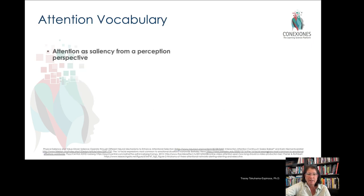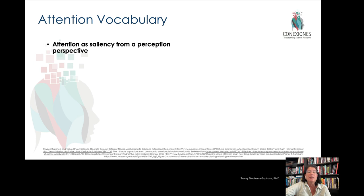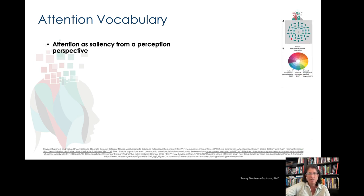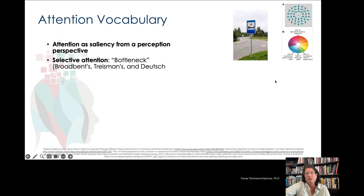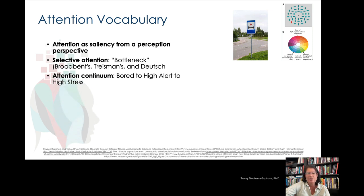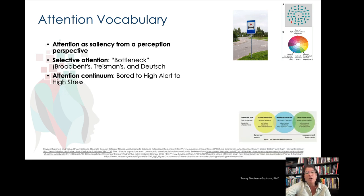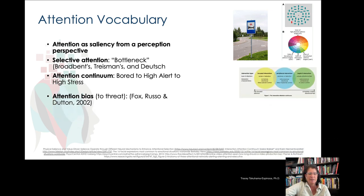Related to attentional vocabulary, there are some terms you might have heard before but maybe don't have a clear definition of how they work together. Attention saliency from a perception perspective is pretty simple — it's just when something stands out from the group. Then we have selective attention, which is when, for example, your kid has a broken hand and you're driving to the hospital and the only thing you can do is look for the hospital exit sign. That's selective attention, which is very different from understanding attention on a continuum of consciousness, basically from high alert to bored.